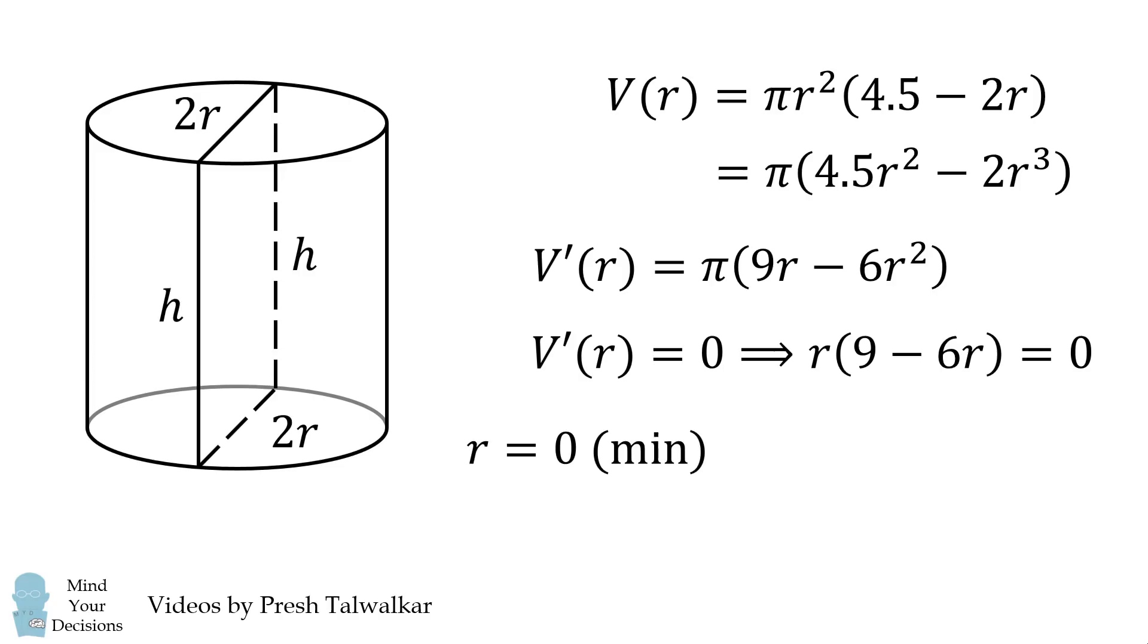One possibility is that r is equal to 0. In this case, the volume will be equal to 0, so this must be a minimum. The other solution will be 1.5, and that's the answer. The radius is equal to 1.5 centimeters. This will be the rectangle that has a perimeter of 9 and gives a maximum volume to the cylinder.